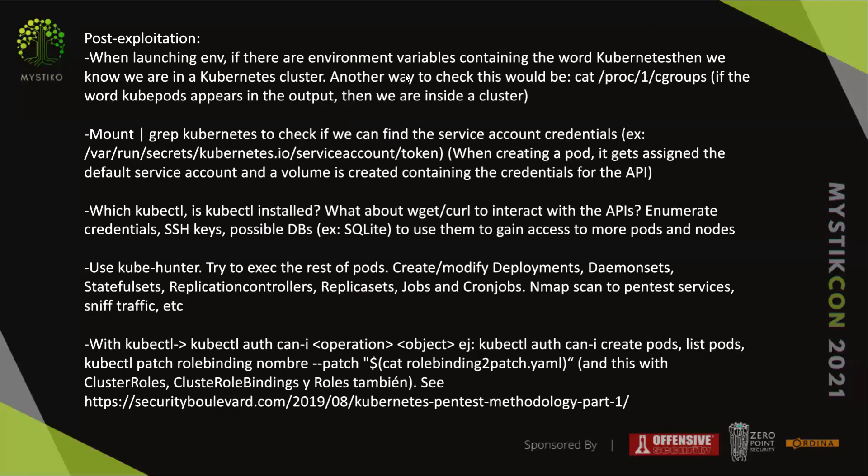One bad thing that's enabled by default is that the default service account token is mounted in every container. You can check what's mounted and get the token. With that token, you can communicate to the API server, and depending on the privileges assigned, potentially also to the kubelet APIs.